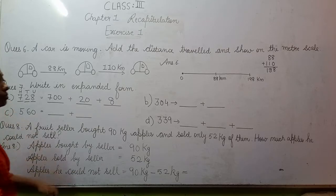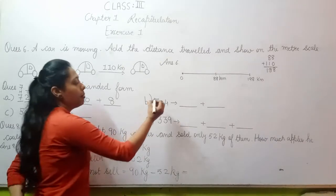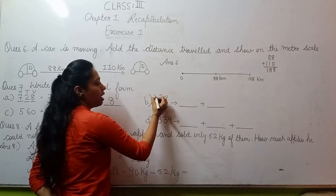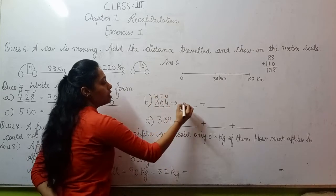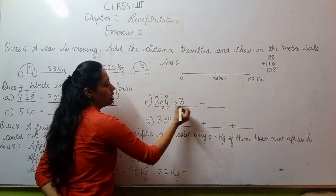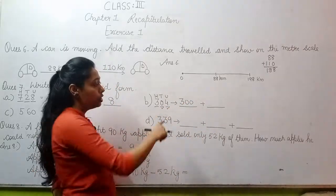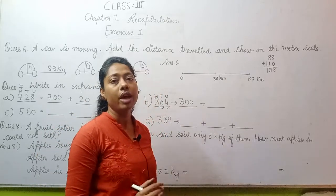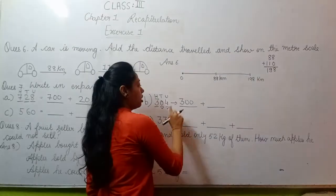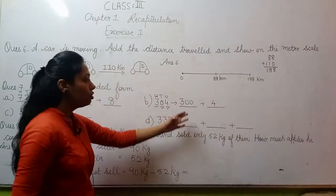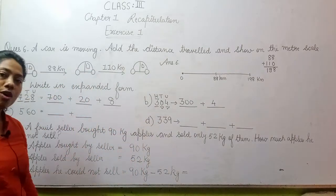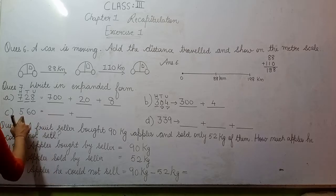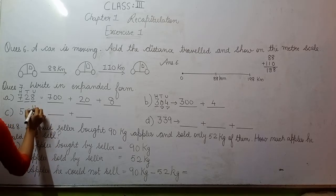Now moving to question B. Again 4 is at unit place, 0 is at tens place, 3 is at hundreds place. Write the hundreds place digit and then we put two zeros. Similarly, now 0 has no value, so whether you write 0 or not it doesn't matter, so we're not writing it. Units place has 4. So 300 plus 4 is the expanded form of this number. Moving to part C, 560.